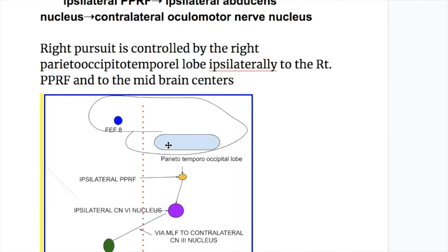For example, right pursuit is controlled by the right parieto-occipital temporal lobe, ipsilaterally to the right parapontine reticular formation, and ipsilaterally to the sixth cranial nerve nucleus — the abducens nucleus — and contralaterally to the oculomotor nerve nucleus via the medial longitudinal fasciculus.